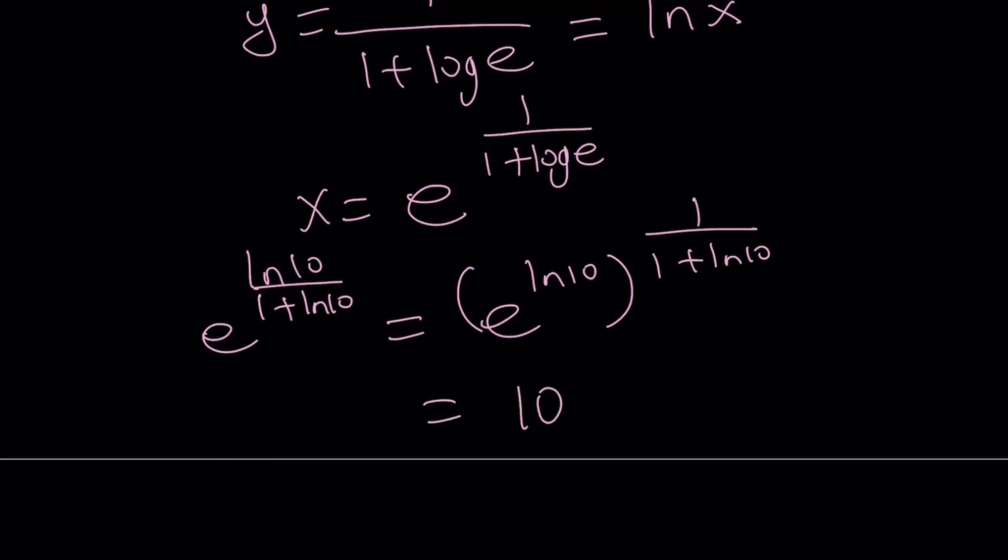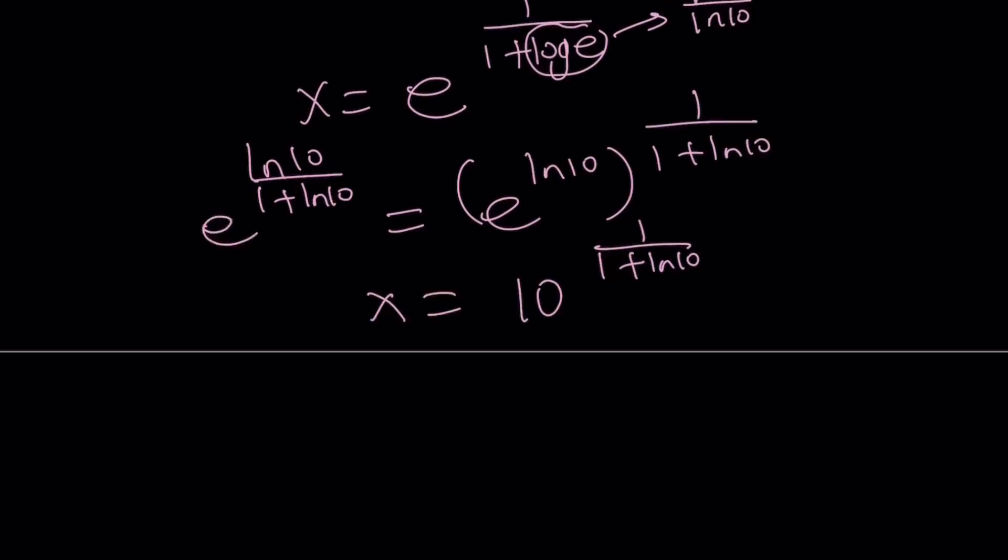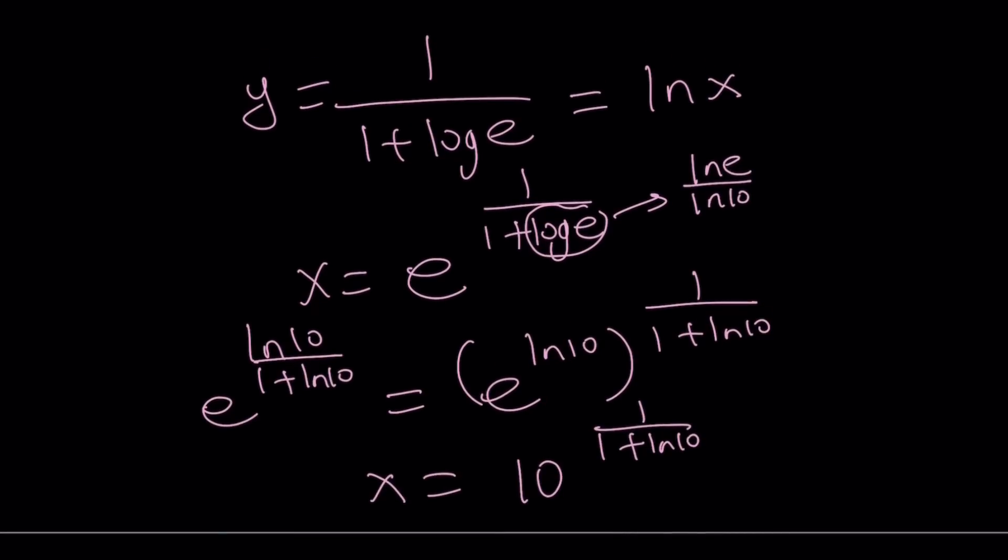10 to the power 1 over 1 plus ln 10. But you might still be thinking, why are they still different? Because the bases are different. If you wanted to change the bases, you can change the bases, write the ln 10, or you can change. This is probably easier. Write the log e as ln e over ln 10, which means 1 over ln 10. And then you're going to notice that it's going to turn into this one. So that is basically how you can turn one of these into another. But it doesn't matter. They're all valid solutions.